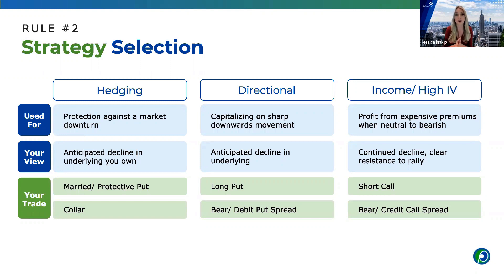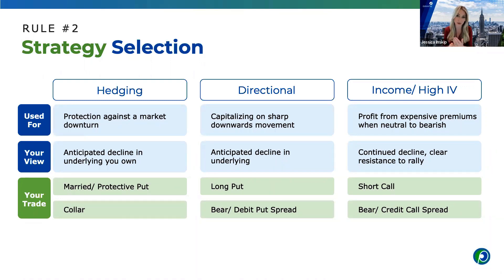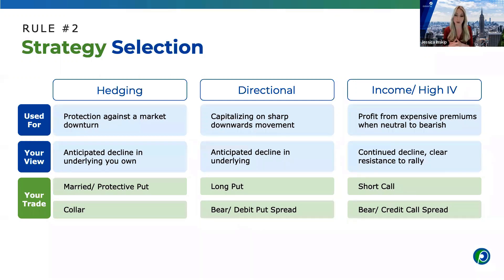Second is directional — capitalizing on a sharp downward movement. Anytime you're buying options for directional plays, you need something to move a lot to be profitable, because you are buying time essentially. If you're anticipating a large decline in the underlying, your beginner trade would be a long put, which makes money as the security goes down. The advanced trade is a debit put spread, where you cap your gain potential to the short strike.